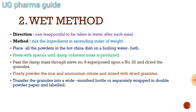Mix the ingredients in ascending order of weight. Place all the powders in a hot china dish on a boiling water bath. Press with a spatula until a coherent mass is produced. Pass the damp mass through sieve number 8 superposed upon number 20 and dry the granules. Finely powder the iron and ammonium citrate and mix with the dried granules. Transfer the granules into a wide-mouth bottle and label.